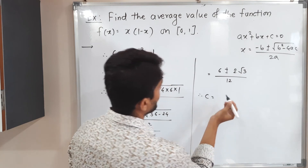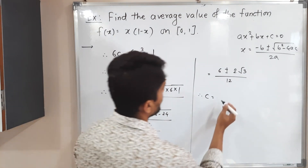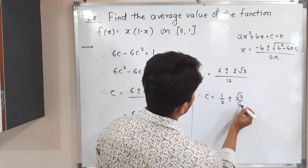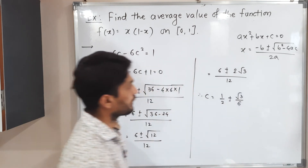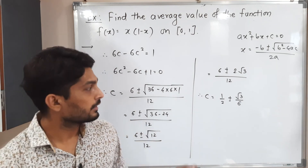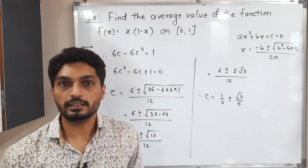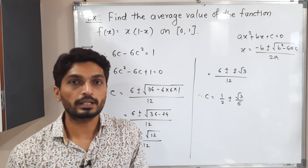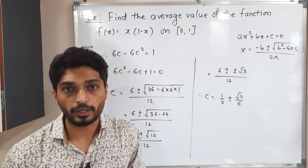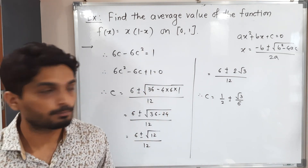Dividing separately, c is equal to 1 by 2 plus or minus root 3 by 6. These are the two required values of c. If both values lie in the interval [0, 1], then for both values we get the average value of f. Otherwise, if only one particular point lies in the interval, that will be the required value of c.